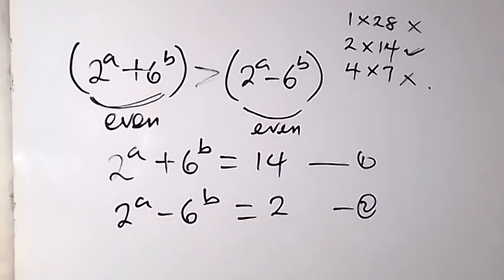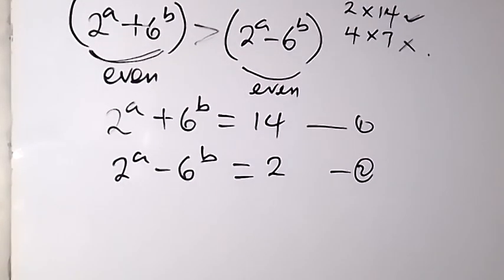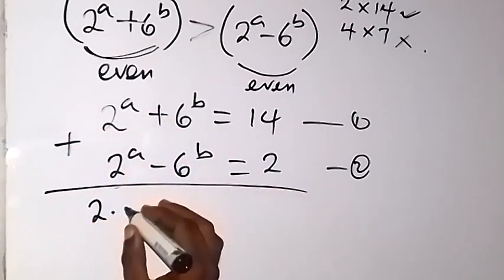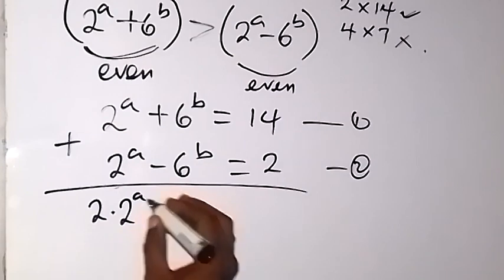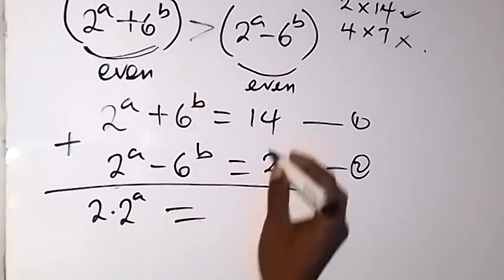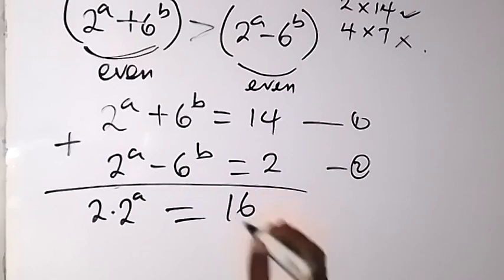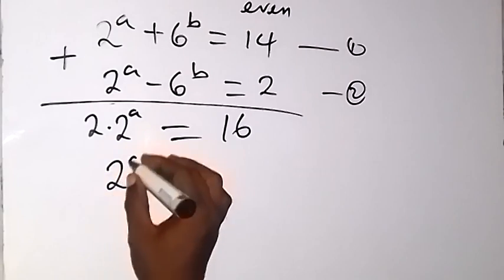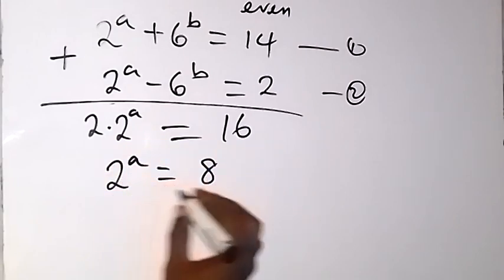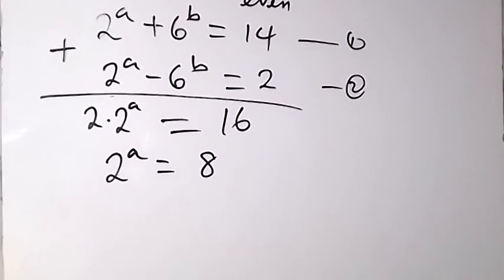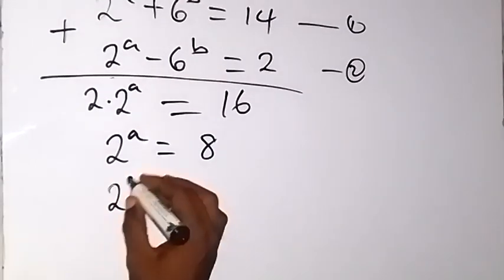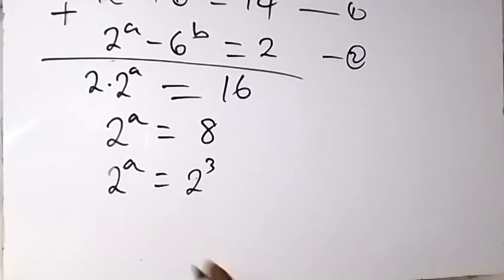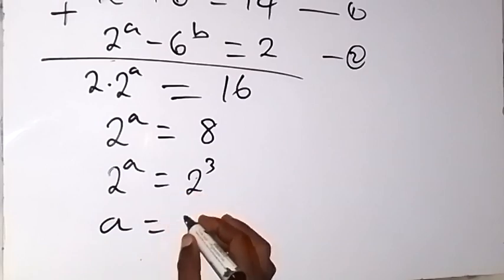Adding gives us 2 times 2 raised to power a equals 14 plus 2, which is 16. Dividing both sides by 2, we have 2 raised to power a equals 8. We can write 8 as 2 raised to power 3, so 2 raised to power a equals 2 raised to power 3. Since we have the same base, a equals 3.